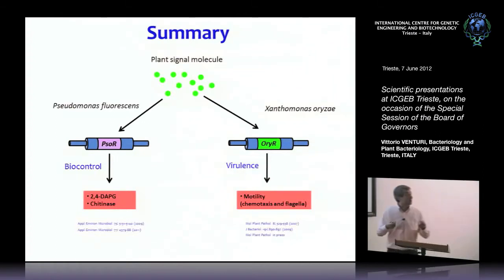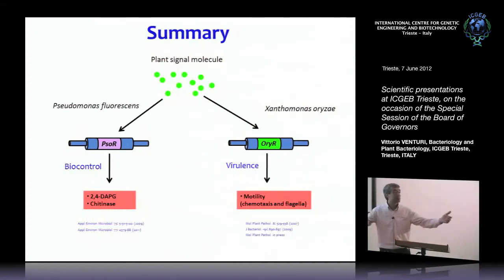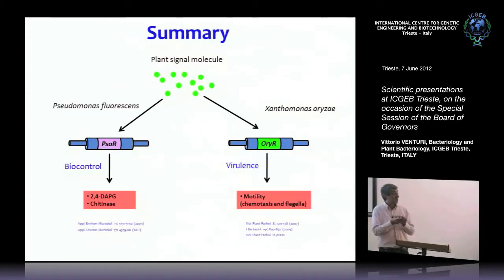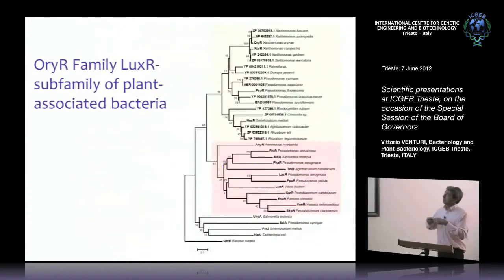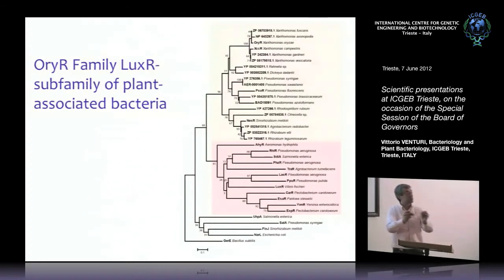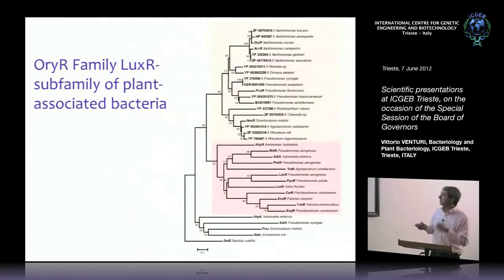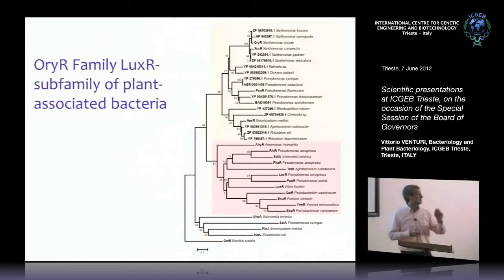For the good guy Pseudomonas, this inter-kingdom system is very important for biocontrol — it regulates antifungal compounds that keep fungi away from the roots. For the bad guy Xanthomonas, it is regulating motility, so that once it gets into the rice, this vascular pathogen can swim very fast to infect the vascular system as quickly as possible. We are now writing a review for a major journal, because this system is very widespread — not confined to only Pseudomonas and Xanthomonas. We find this protein in many bacteria, and all of them are plant-associated; we don't find it in E. coli, Shigella, or human- or animal-associated bacteria. So we think we've identified a new inter-kingdom signaling pathway between plants and bacteria.